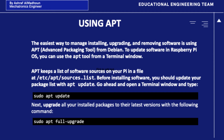Using the APT. The easiest way to manage installing, upgrading, and removing software is using APT, or the Advanced Packaging Tool from Debian. To update software in Raspberry Pi OS, you can use the APT tool from a terminal window. APT keeps a list of software sources on your Pi in a file at /etc/apt/sources.list. Before installing software, you should update your package list with apt update. Go ahead and open the terminal window and type sudo apt update. Then upgrade all your installed packages to their latest versions with the following command: sudo apt full-upgrade.